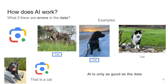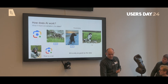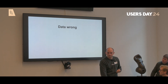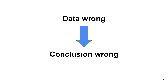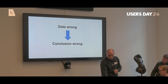The takeaway here is: AI is only as good as the data that we give it. We need to make sure that the data is right, because when the data is wrong our conclusion will also be wrong. If the data is right, then our conclusion might be right, depending on the model and training.